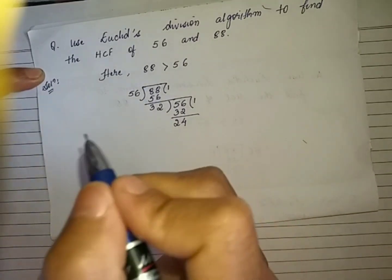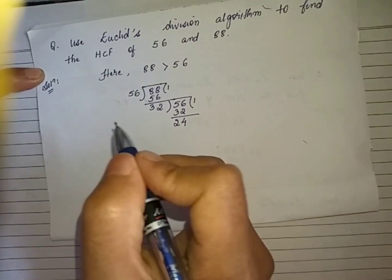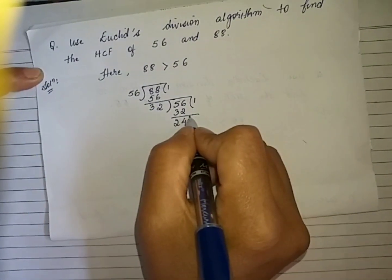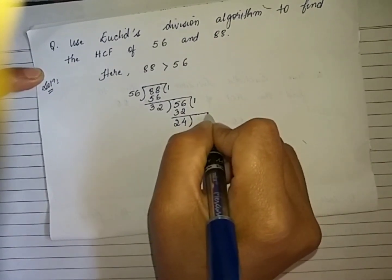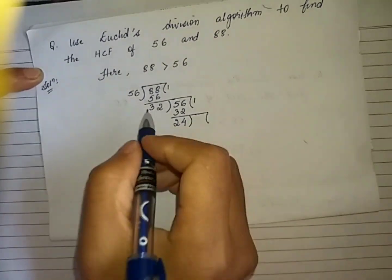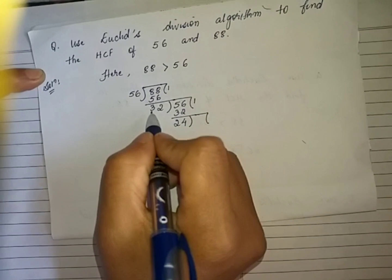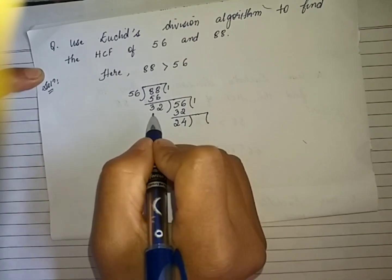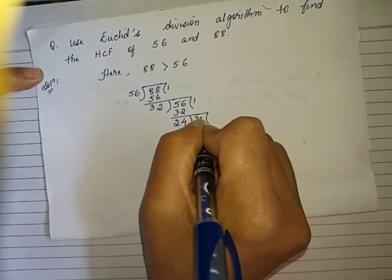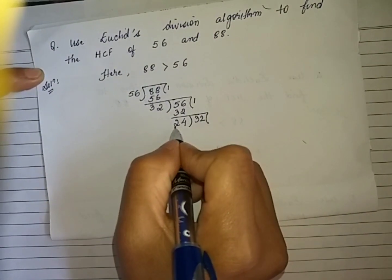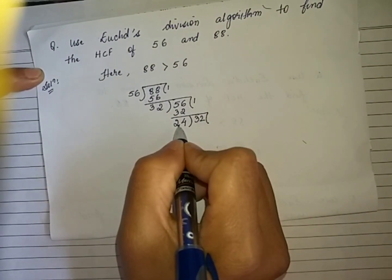We again continue with the process by taking our last divisor to be the new dividend and our last remainder to be the new divisor.